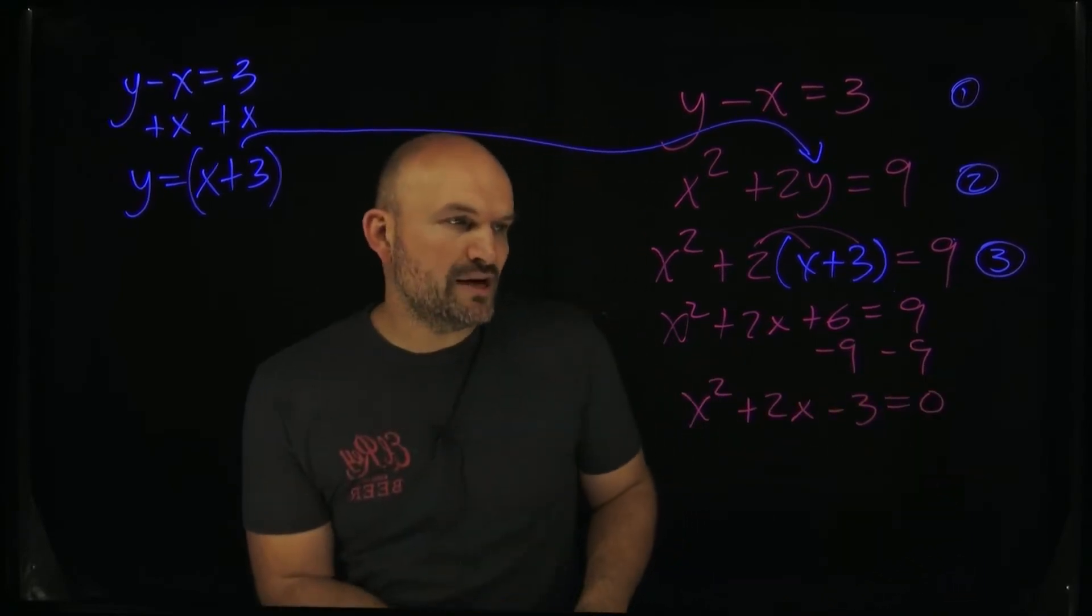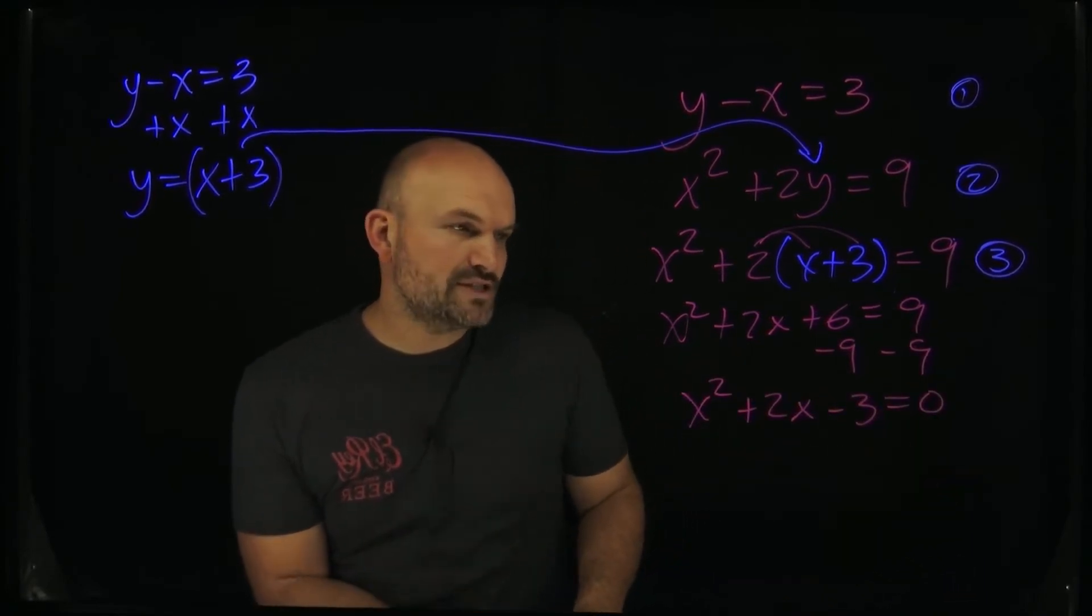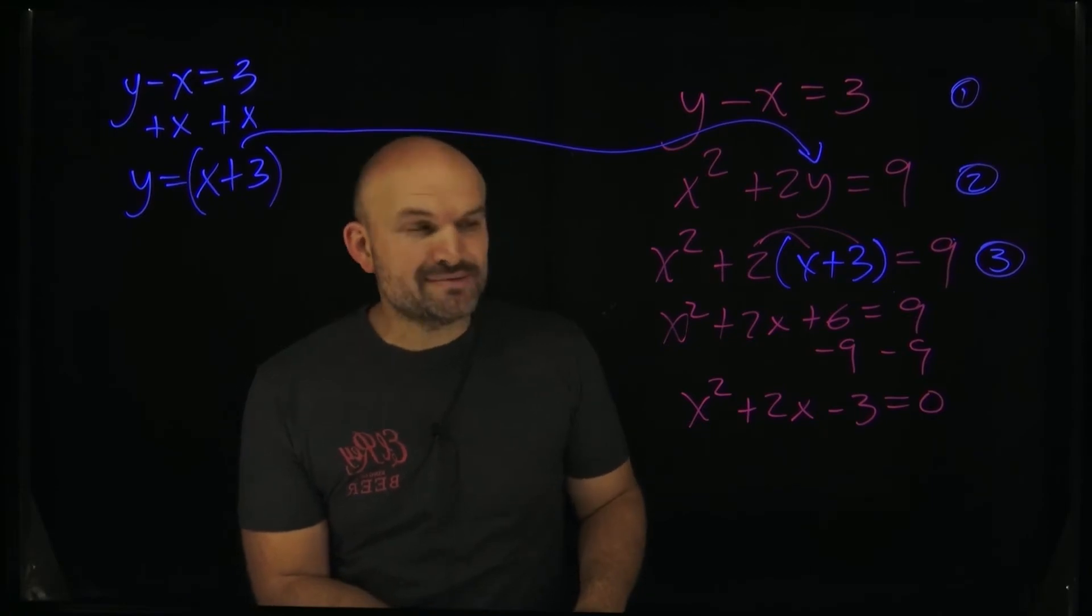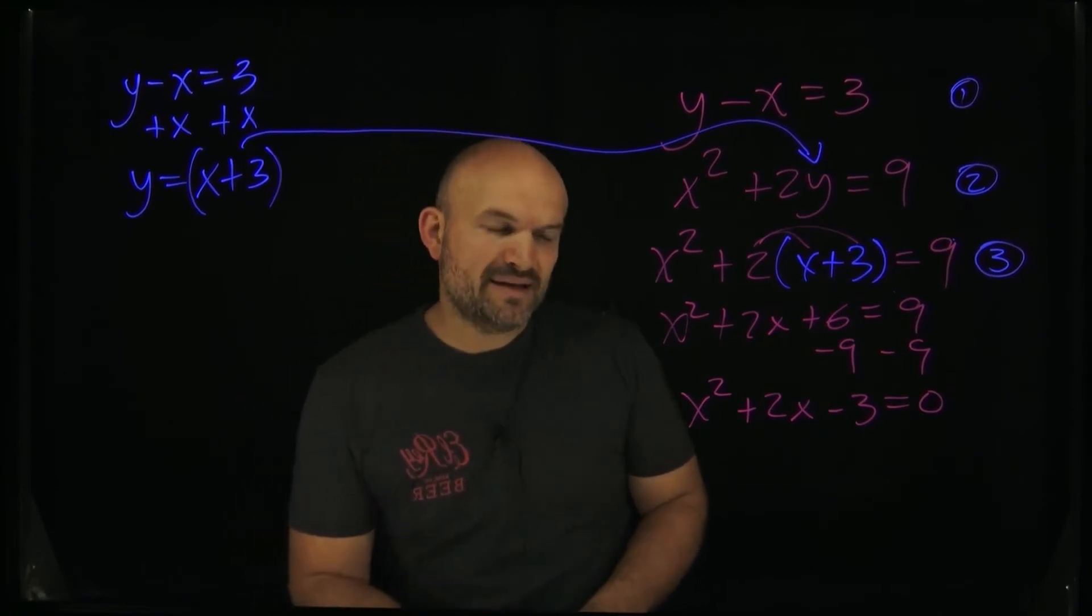OK. So now we have a quadratic equation, set equal to zero. Now I've got to think to myself, what two numbers multiplied to give me negative three are going to add, give me a positive two. In that case, I'm looking at a positive three and a negative one.